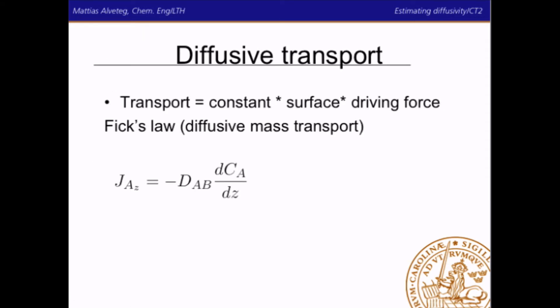The diffusive transport, according to Fick's law, is a constant times the surface times the driving force. So, if we express it per square meter, taking away the surface there, we get the diffusivity times the concentration gradient here. How fast the concentration changes in a certain direction. And if we look at the units, we have the distance in meters, the concentration in mole per cubic meter, and we want to have the transport in mole per square meter per second. So, we can ask ourselves, what is the unit of diffusivity? Well, it's square meter per second.